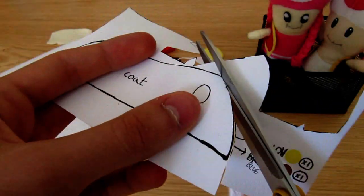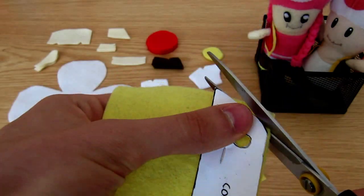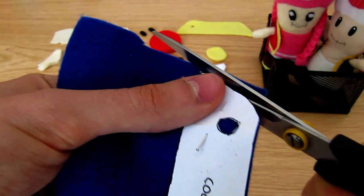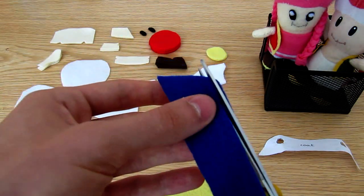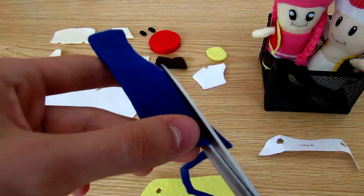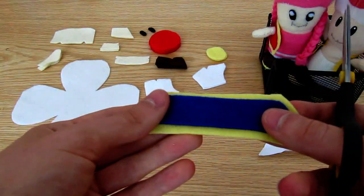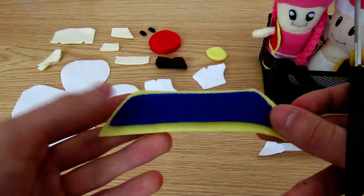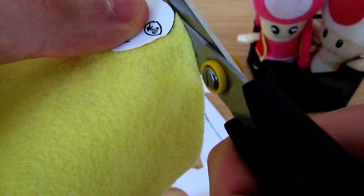For the coat, cut out the shapes in yellow, and then in either red for Toadette or blue for Toad. Then trim down the red or blue piece so that it shows up as a border. Don't worry about the armholes for now. We'll sort them towards the end. The same goes for the dress if you're making Toadette.